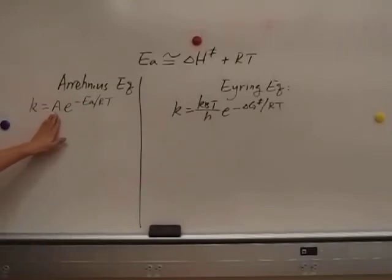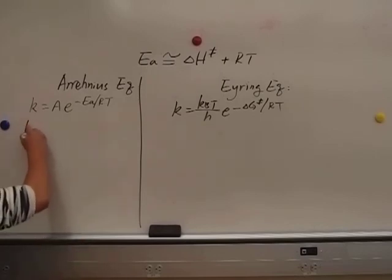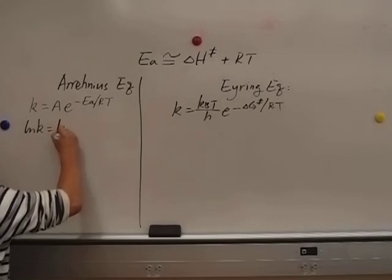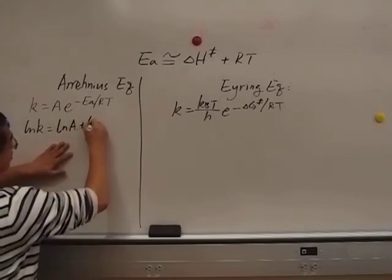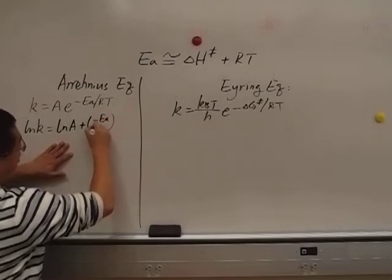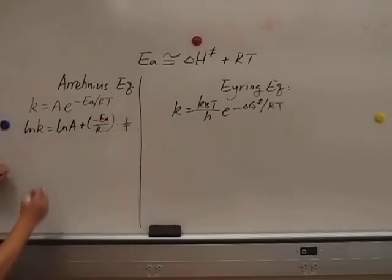K equals the pre-exponential factor A times e to the power of negative Ea, the activation energy divided by RT. It's very easy to see if we take the logarithm of K, it equals ln A plus negative Ea over R times 1 over T. I write it this way because we can see now ln K is a linear function of 1 over T, and this guy is a slope.